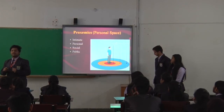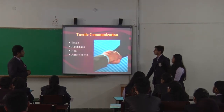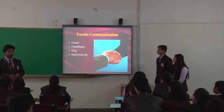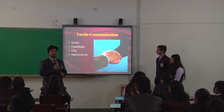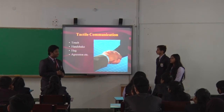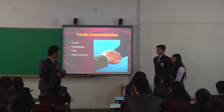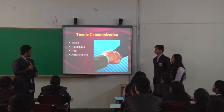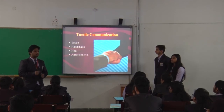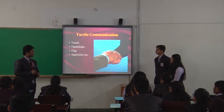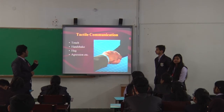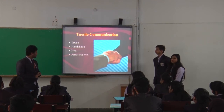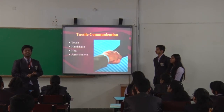The next category is haptics — communication through touch. When you touch someone, it conveys meaning. For example, if I shake hands very tightly and strongly, it depicts that I am trying to dominate that person. If I do it very lightly, it shows I am not confident. The right way is to maintain a slight pressure and shake twice — don't do it too strongly, as it emits a very wrong message. A hug represents closeness — we don't hug every person we meet, only those with whom we share a personal relationship.